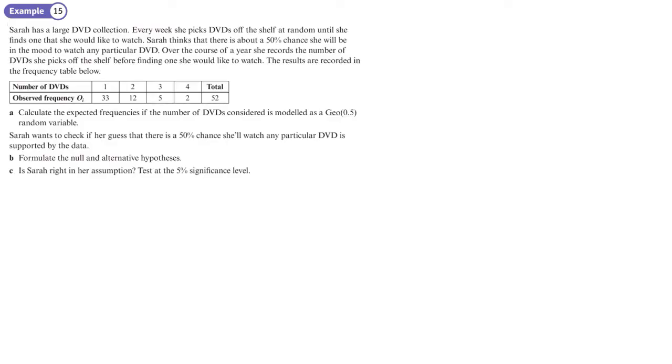Sarah has a large DVD collection. Every week she picks a DVD off the shelf until she finds one that she would like to watch. The trials continue until we get success and then it stops, so that's going to be a geometric distribution. She thinks there will be a 50% chance she will be in the mood to watch any particular DVD, so P equals 0.5. Over the course of the year, she records the number of DVDs she picks off the shelf before finding one she would like to watch. The results recorded in the table below.